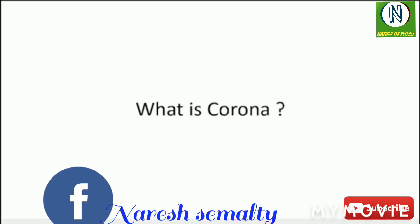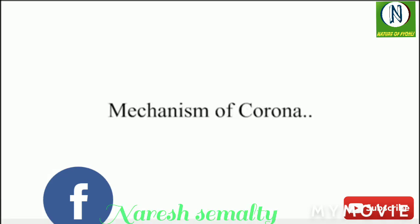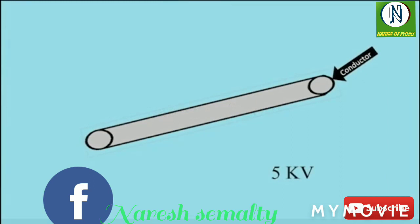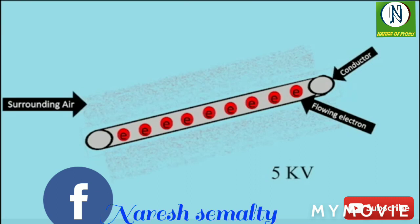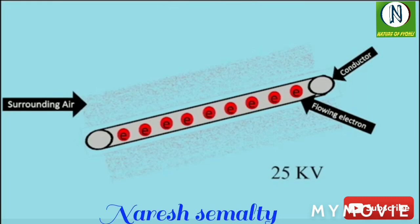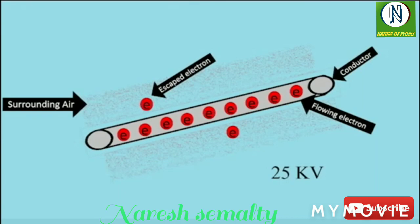Now let's look at the mechanism of Corona. When an alternating current is made to flow across two conductors or a transmission line whose spacing is large compared to their diameter, the air surrounding the conductor is subjected to dielectric stress. At low voltage values nothing really occurs, as the stress is too low to ionize the surrounding air. But as the voltage increases, the air is subjected to more dielectric stress and some electrons escape from the conductor into the air, ionizing it.